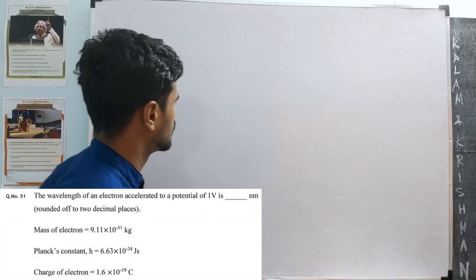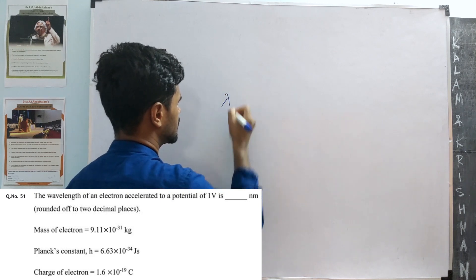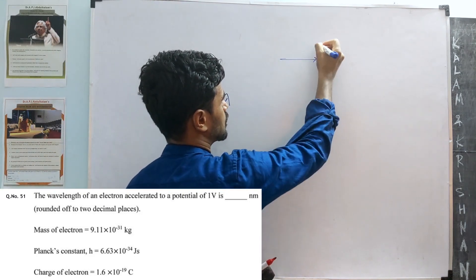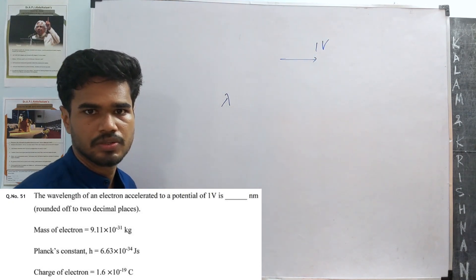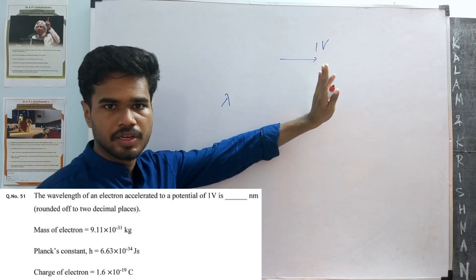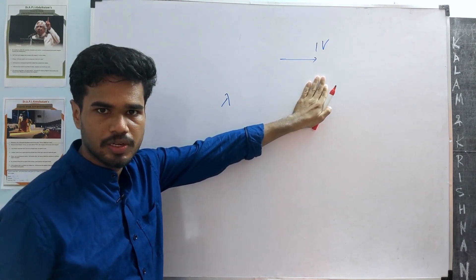So we want the wavelength of an electron, let's say lambda, that's accelerated to a potential of 1 volt. When something gets accelerated, it picks up momentum, kinetic energy, and all that. Somehow we need to relate that to what the wavelength is.